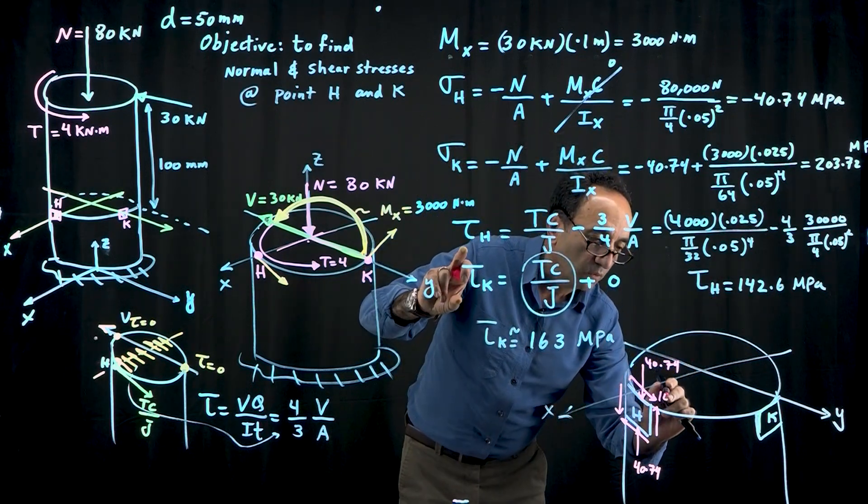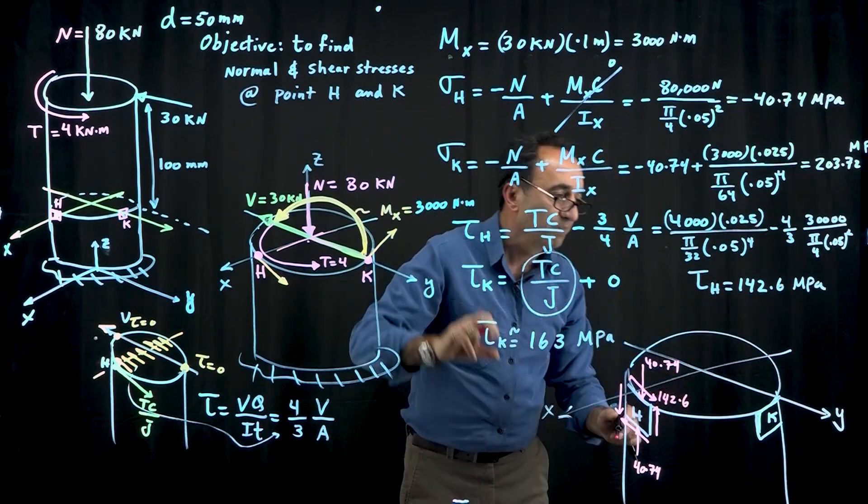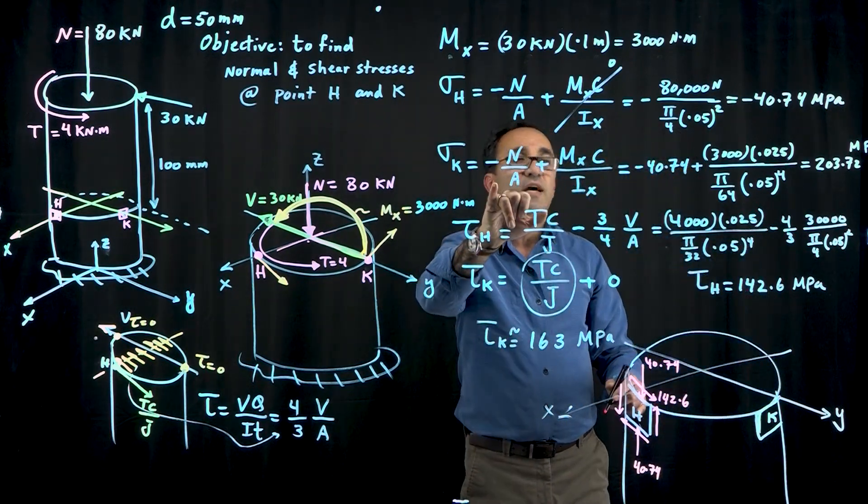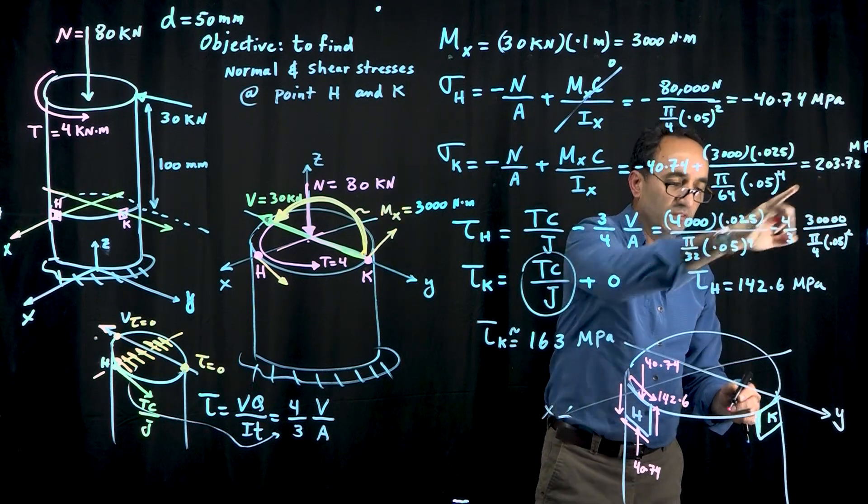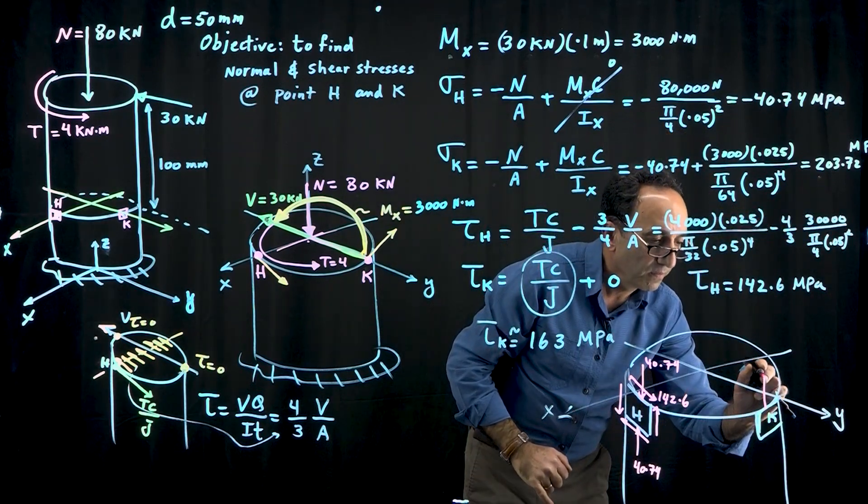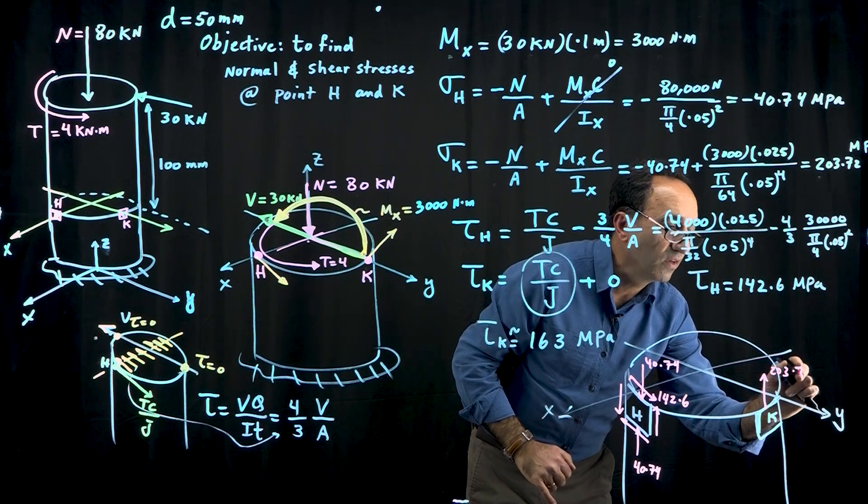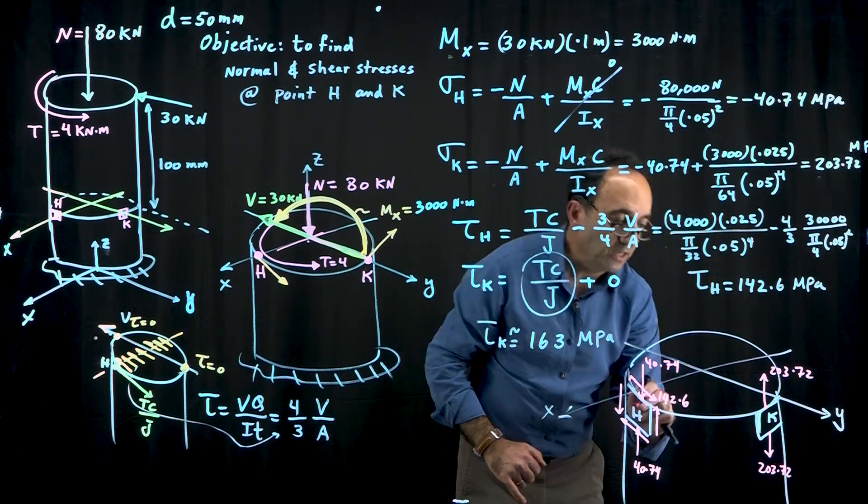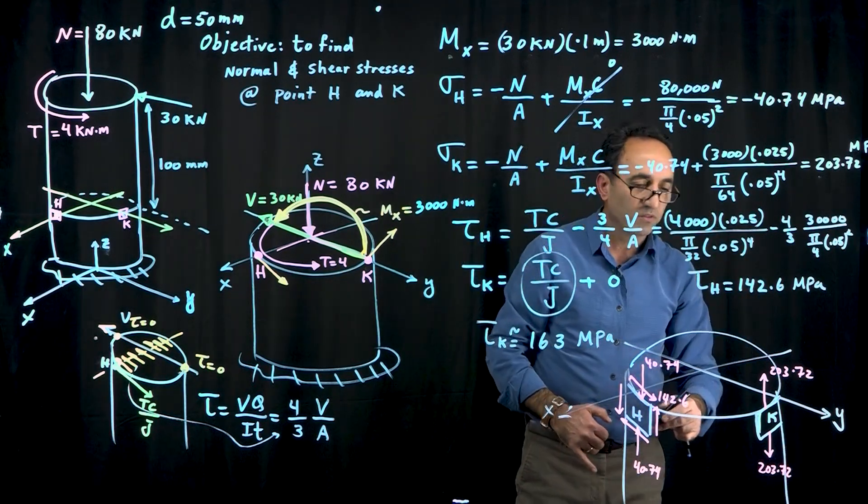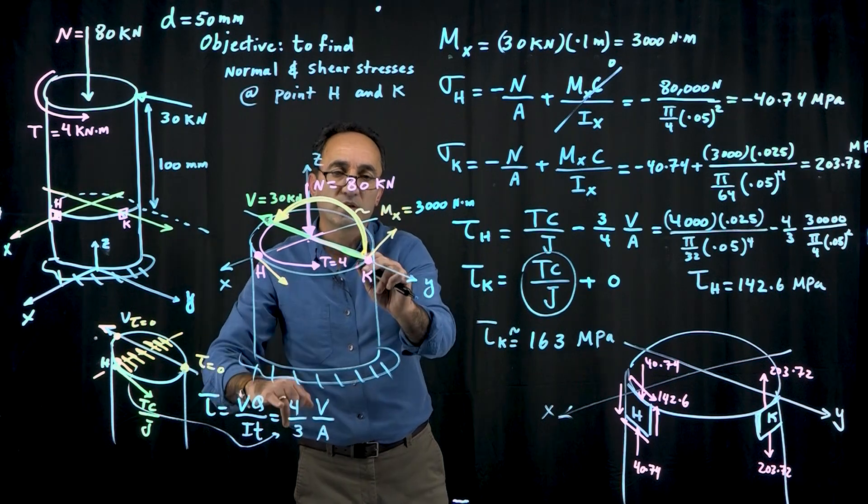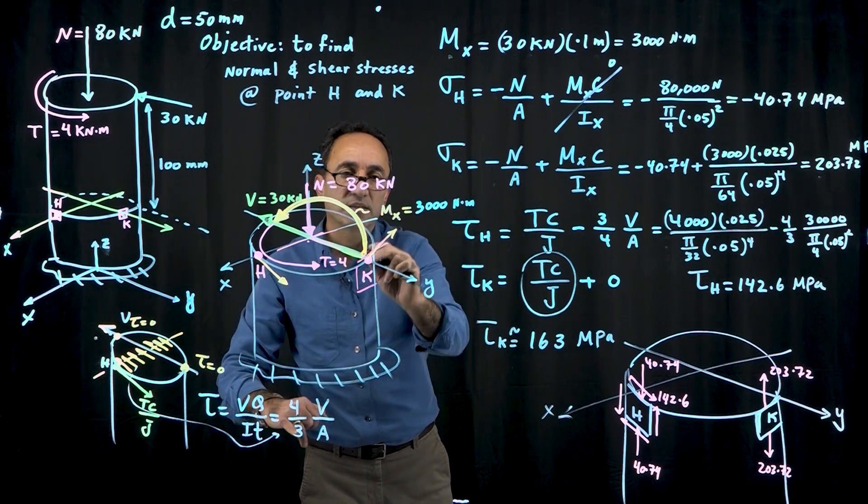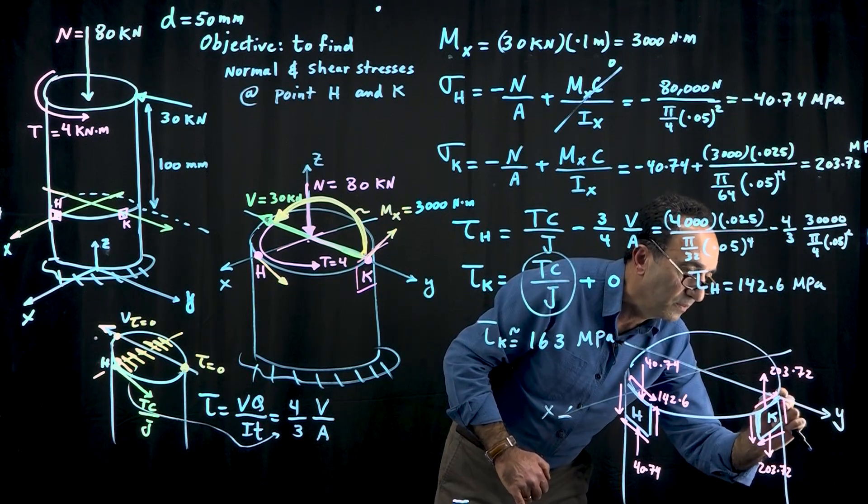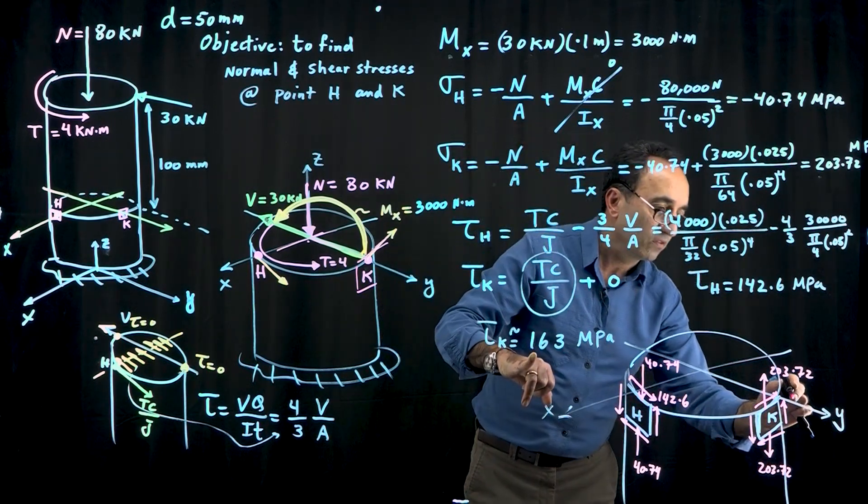For point K, we have a tensile stress of 203.72 megapascals, which is much more stress than point H in terms of normal stresses. The shear stress acts in this direction, which means like this here, down and up, and that was about 163 megapascals.